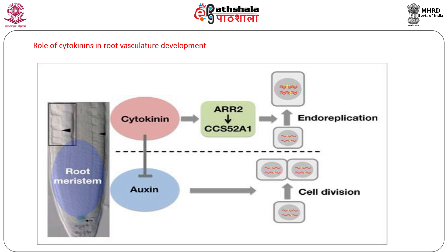Cytokinins also alter cell cycle progression in the root meristems. In the meristematic regions, cytokinins inhibit auxin signaling and promote cytokinesis. However, in the transition region between the meristem and elongation zone, cytokinin signaling leads to endo-reduplication rather than cytokinesis in the cells of this region. Hence, cytokinins show opposite effects in regulating the progression of the cell cycle in these root zones.